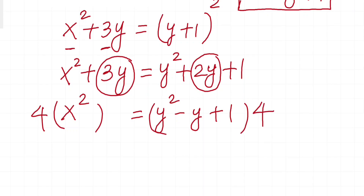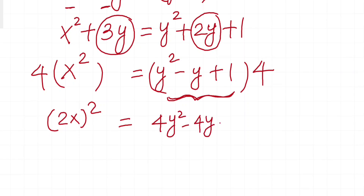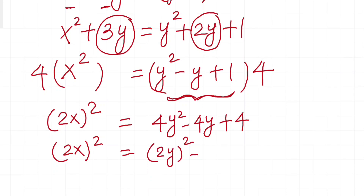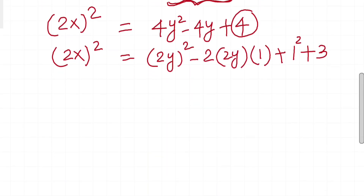You can now guess why I chose y + 1 — so that I can apply the completing the square method. After multiplying by 4, we get 4x² = 4y² - 4y + 4. This is (2y)² - 2·(2y)·1 + 1², and I break down the 4 into 1 + 3, giving us 1 to complete the square.